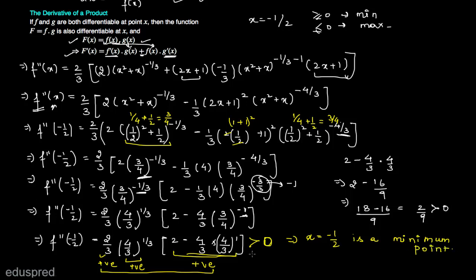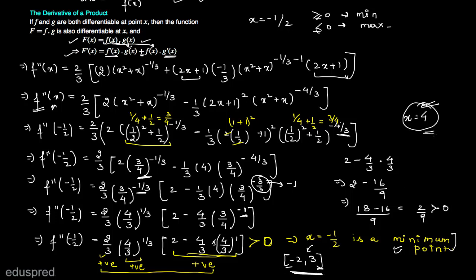Since x = −1/2 is a minimum point and the question asks for extreme points in the range [−2, 3] where both endpoints are included, and since x = −1/2 belongs to this range, we confirm it is a minimum point for this function in the given interval. As a hypothetical example, if x = 4 had been an extreme point, since it does not belong to [−2, 3] we would not count it. That is the complete solution to this question.